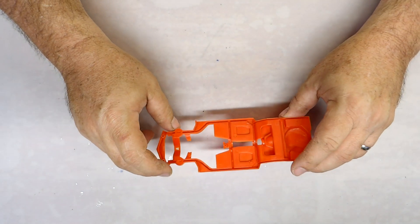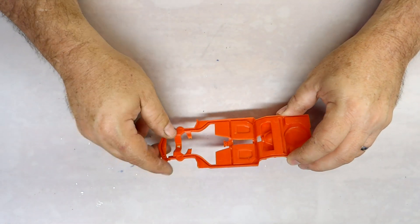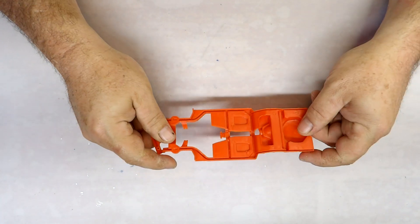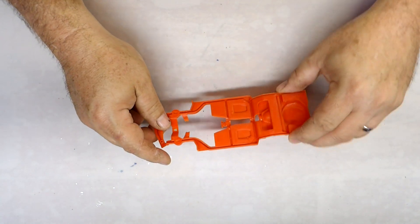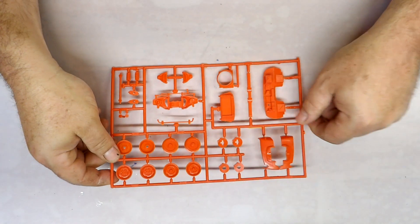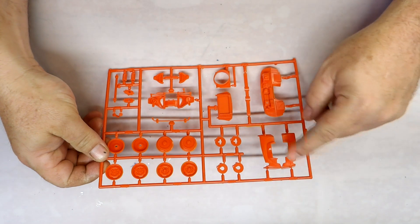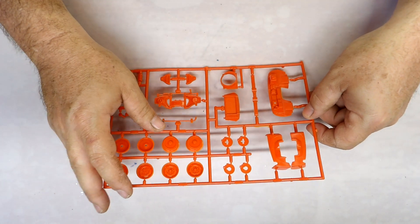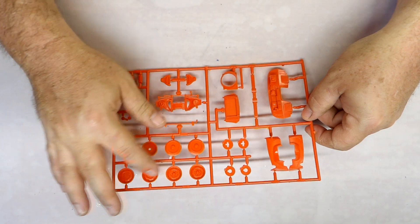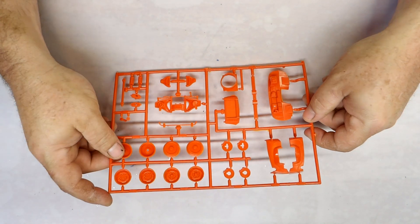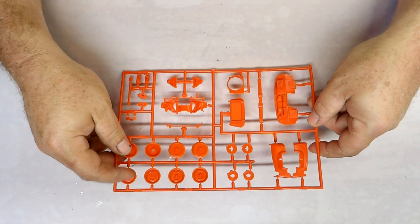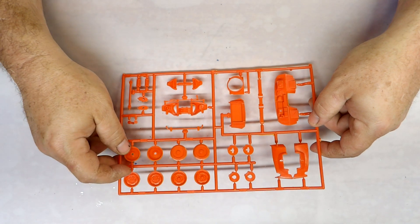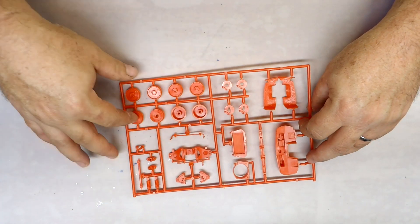Doesn't look like there's any interior tub work or anything in the parts of this. This tree's got the firewall, the inner fenders, brake calipers it looks like, the rally wheels or just the stock wheels, stock Corvette wheels I guess. And here's your wheel backs.